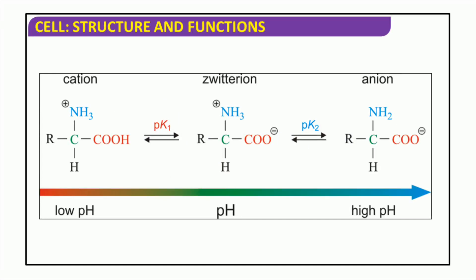Exploring the structure, properties, and different types of biomolecules — this slide shows an example of a zwitterion, a molecule with both a positive and a negative charge. Comprised of an amino group (positively charged), a carboxyl group (negatively charged), an oxygen atom and a hydrogen atom, the electrical neutrality of a zwitterion is what allows it to play an important role in many biological processes.